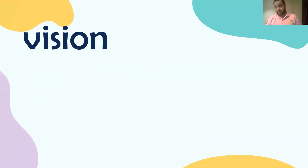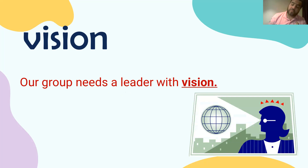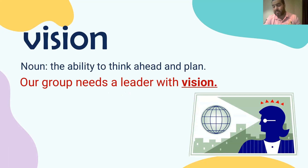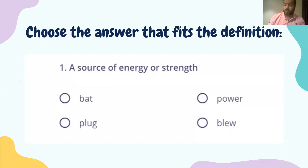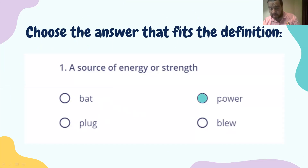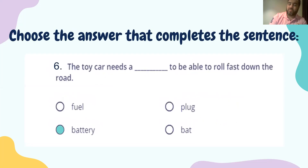And now we have the word 'vision.' Our group needs a leader with vision. The meaning of 'vision' is the ability to see and understand at the same time — a way of thinking, and it should be a good one. That's the meaning of 'vision.' Here we have some questions: for example, 'a source of energy or strength' — the answer could be bat, plug, blow, or power. The word is 'power,' because that refers to energy.